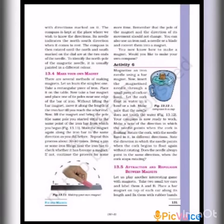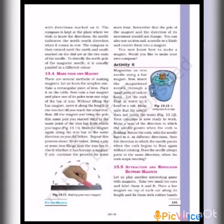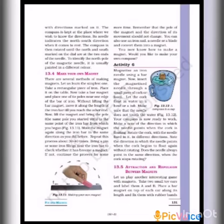Activity 6: We need to magnetize an iron needle using a bar magnet. We can also magnetize a blade, nail, and other iron objects using a bar magnet. This is how we use a magnet as an ion-aid magnet.